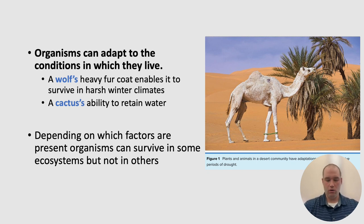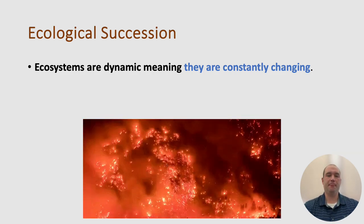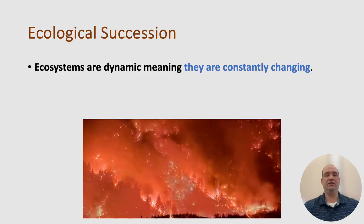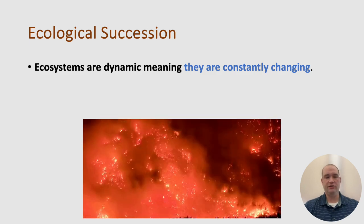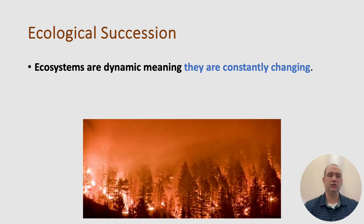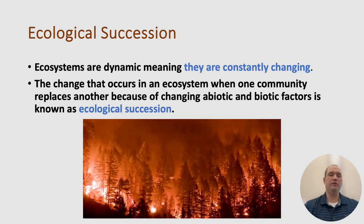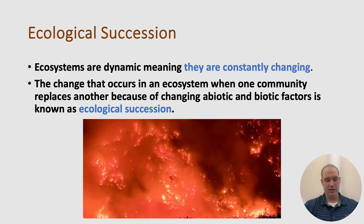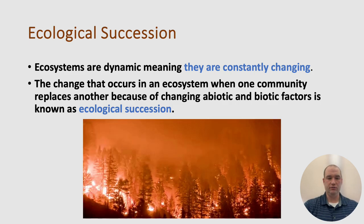Let's take a look at how organisms change in our conditions — we're going to be looking at ecological succession. Ecosystems are dynamic, meaning they are constantly changing, whether it's through weather conditions, forest fires, a tree falling, or amount of sunlight. The change that occurs in an ecosystem when one community replaces another because of changing abiotic and biotic conditions is what we call ecological succession.